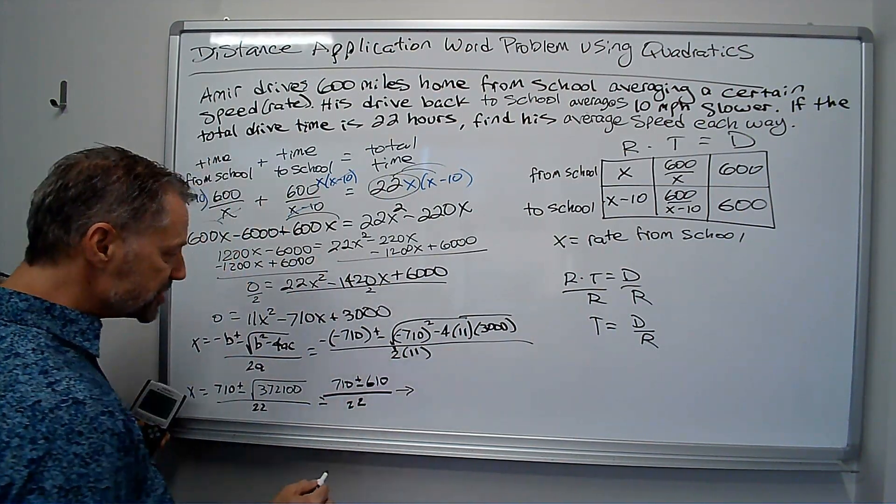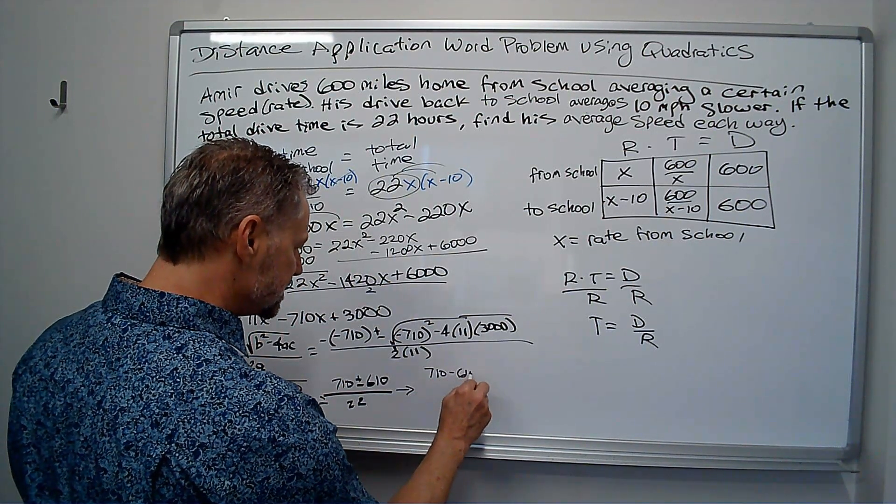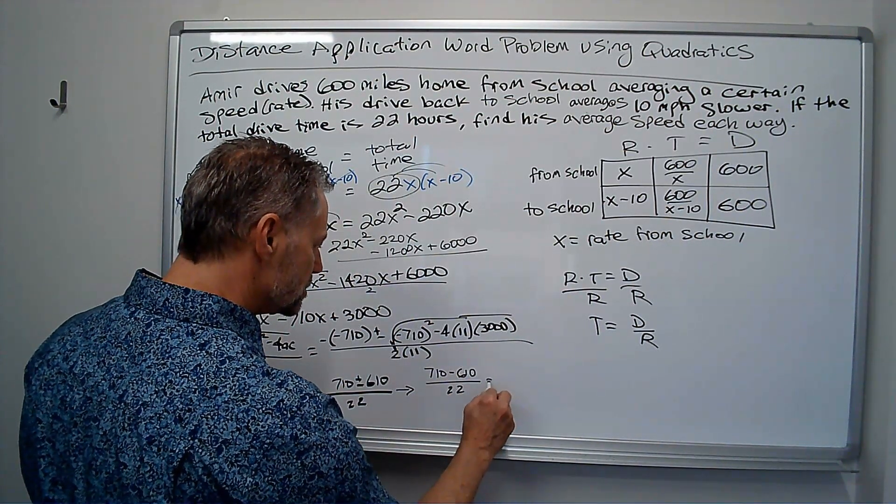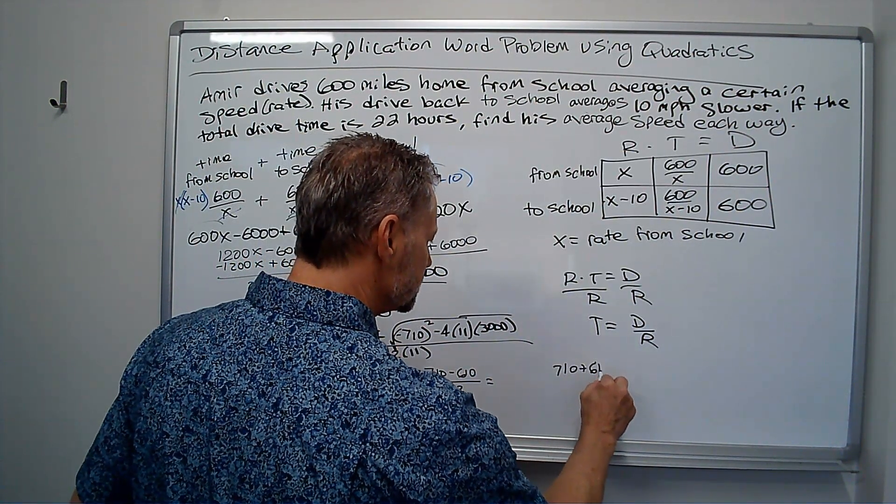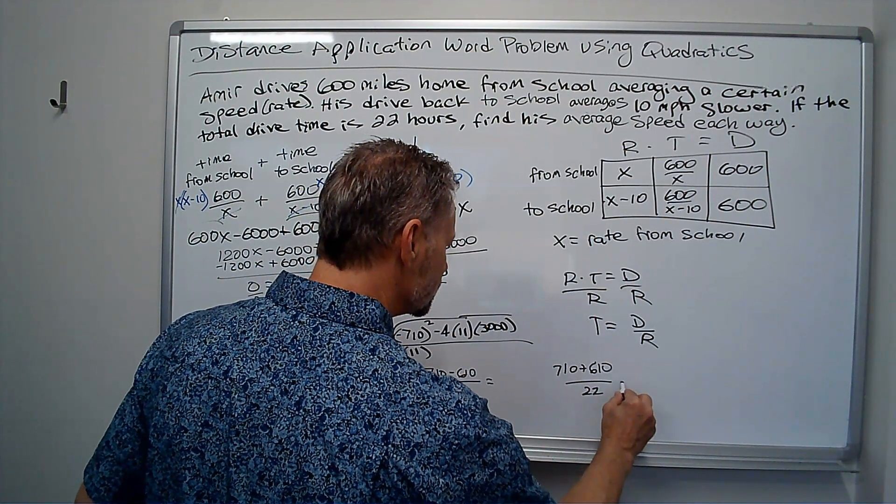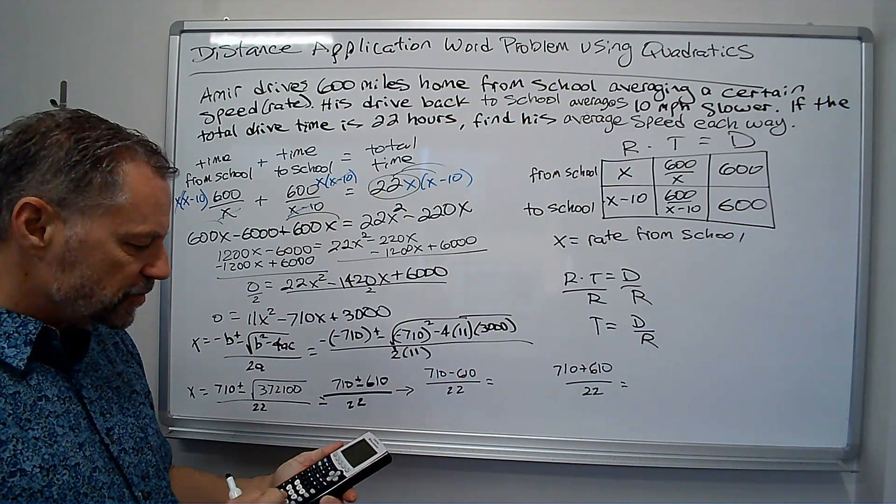So, I get 710 plus or minus 610 divided by 22. So, that's going to give me two answers. It's 710 minus 610 divided by 22.